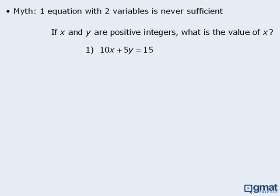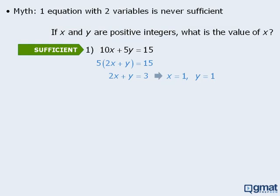Here's another question with one equation and two variables. Here we want to find the value of x, and statement 1 gives us one equation with two variables. Before we conclude that statement 1 is not sufficient, let's take a closer look. First we'll factor the left-hand side, and then divide both sides by 5, giving us 2x plus y equals 3. Now under most circumstances there would be an infinite number of solutions, however we need to remember that the question tells us that x and y are positive integers. If x and y must be positive integers, then there is only one solution — x and y both equal 1. So statement 1 is sufficient. The condition that x and y are positive integers made this statement sufficient.